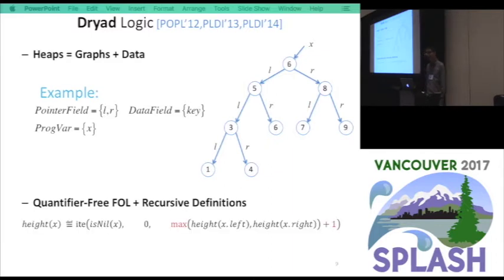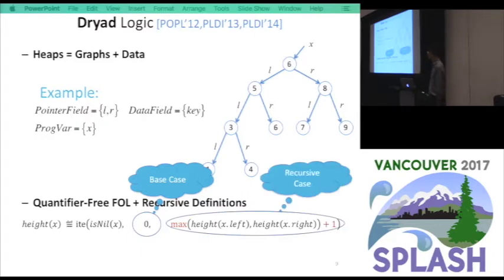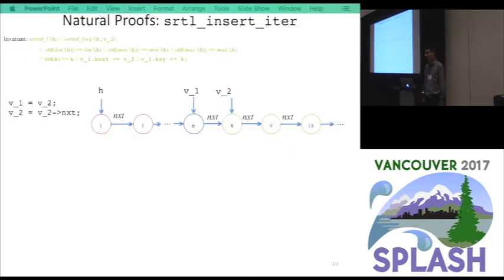Based on this heap representation, DryIt logic, in a nutshell, is a quantifier-free first-order logic extended with recursive definitions. With the recursion, you can talk about a lot of very sophisticated properties. For example, you can define the height recursively. In the base case, if the tree x is nil, it's an empty tree, then the height is zero. Otherwise, you compute the height of the left and right subtrees recursively, take the larger one and plus one. That's how you compute the height. You can define a lot of different definitions to talk about the sophisticated properties. That's the basic setting, that's the logic.